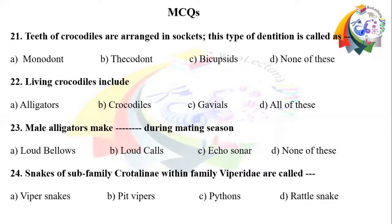Question number 21: Teeth of crocodiles are arranged in sockets; this type of dentition is called. Option A: monodont. Option B: thecodont. Option C: bicuspid. Option D: none of these.